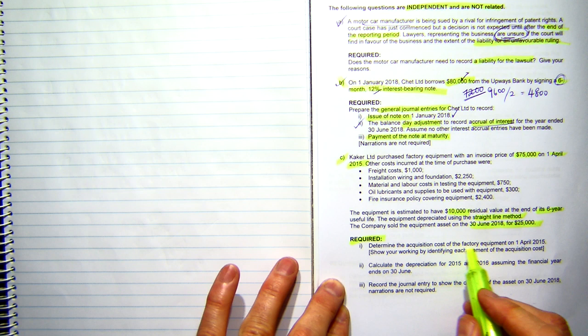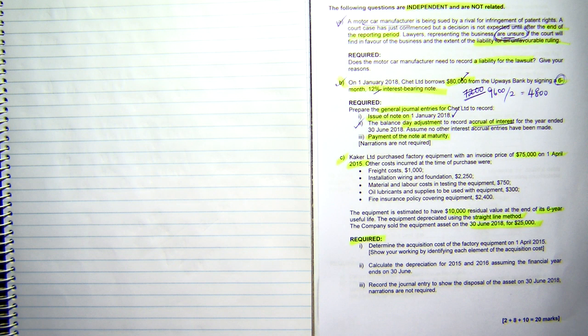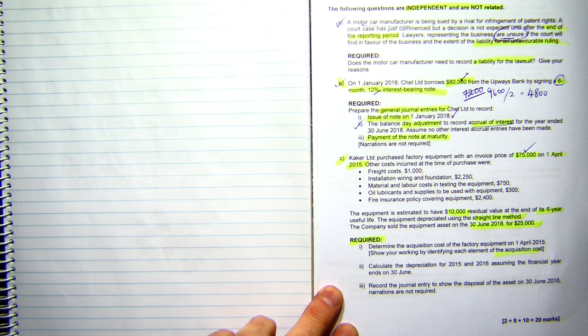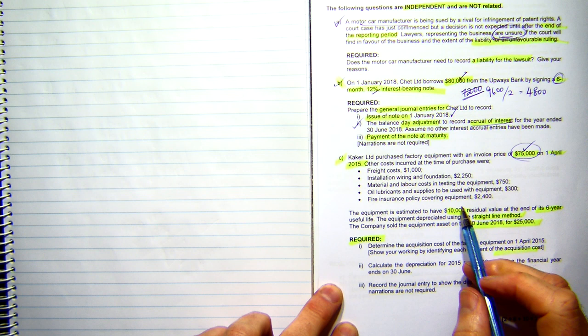Required: determine the acquisition cost of the factory equipment on the 1st of April 2015, showing your workings by identifying each element in the actualization. Don't just tell me the last price, because if you get that wrong, that means I can't give you marks along the way. First things first, we're going to include that as a capital cost. We're looking at what are the capital costs of this equipment.